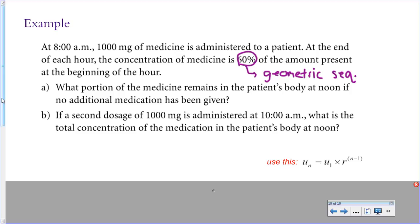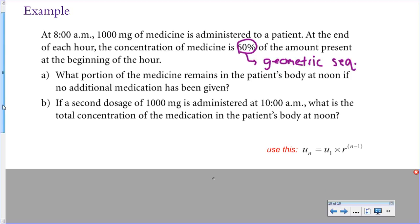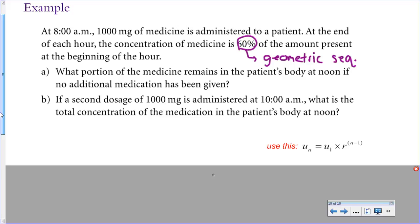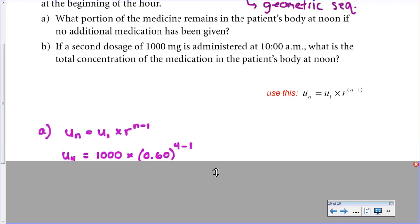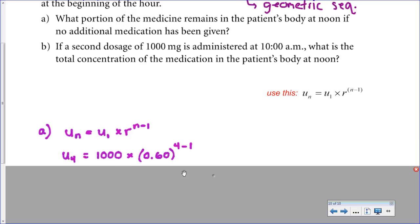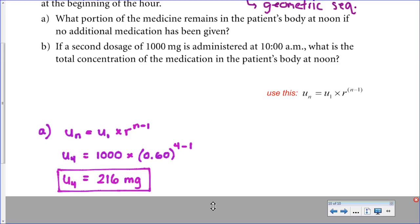The first question asks what portion of the medicine remains at noon. At noon we're talking about four hours later, so we're looking for the fourth term of this sequence. Using the formula, the first term is 1,000 milligrams and the common ratio is 0.6, since that's what's being multiplied each time. I plug in 4 for n, evaluate it on the calculator, and there are 216 milligrams remaining.